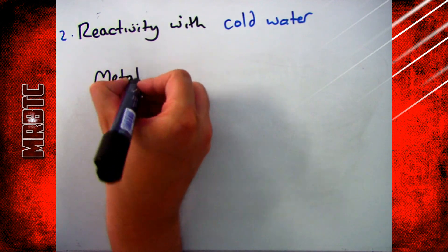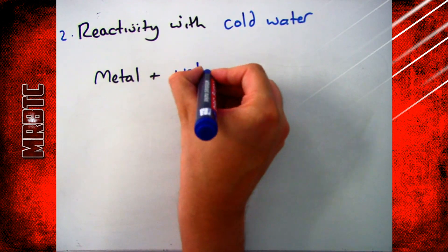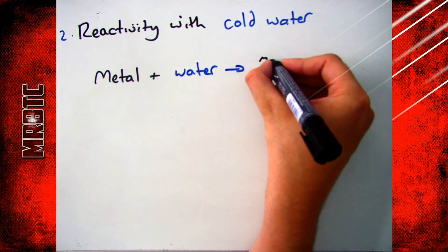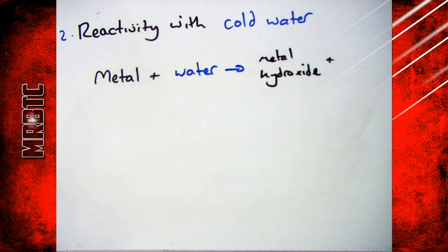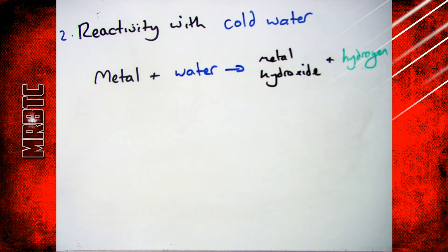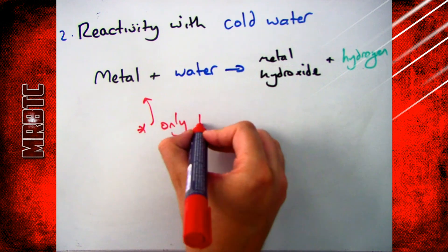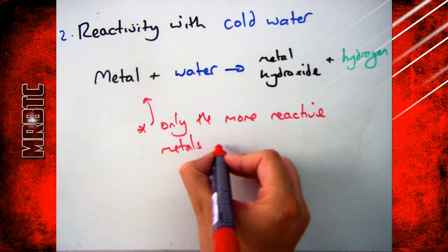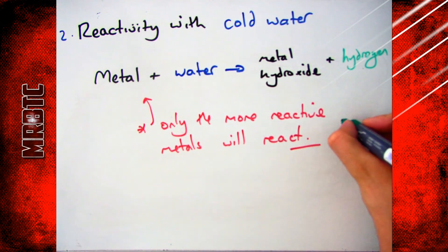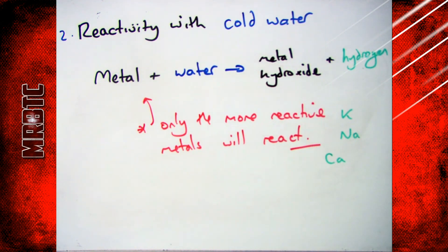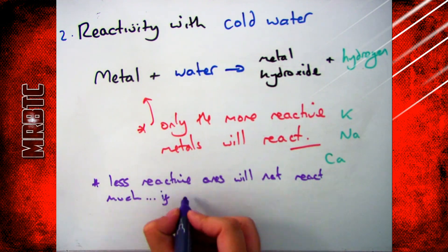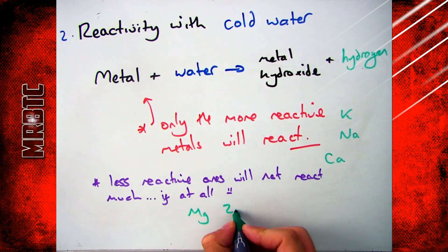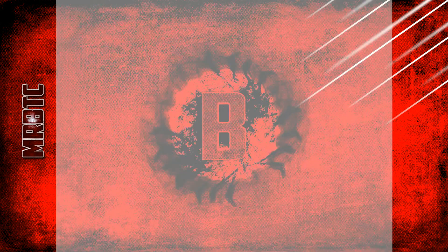Moving on to reactivity with water: if you take cold water and add it to a metal, if it's reactive enough you will get a metal hydroxide and hydrogen gas, which you can again prove with the squeaky pop test. This only works with the more reactive metals like potassium, calcium and sodium. With an unreactive metal like magnesium, not much will happen and there will be no reaction.